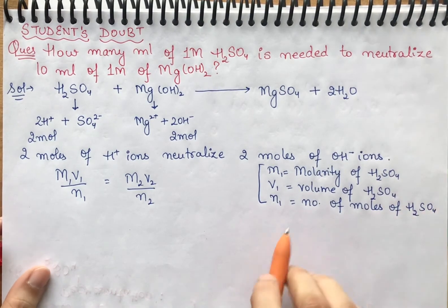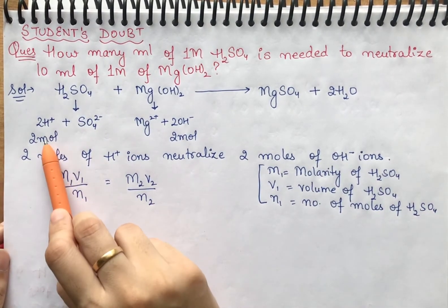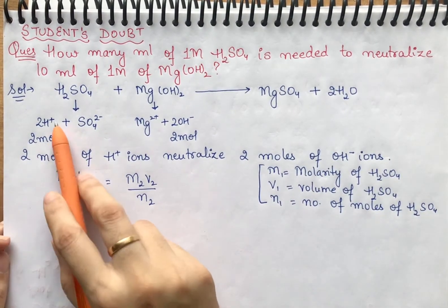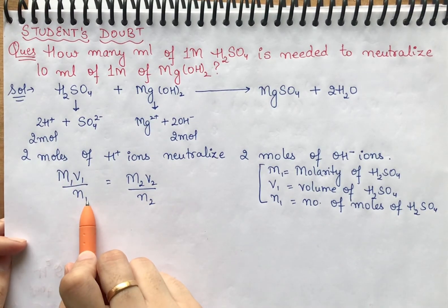Now we need the number of moles of H+ ions, so N will represent the moles of H+ ions.